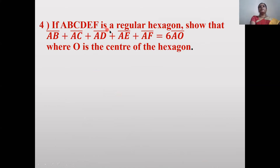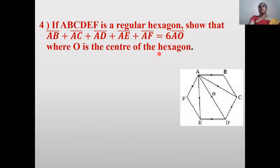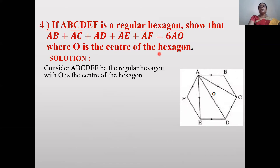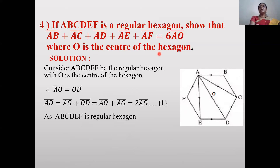Next problem: If ABCDEF is a regular hexagon, show that ĀB̄ + ĀC̄ + ĀD̄ + ĀĒ + ĀF̄ = 6·ĀŌ, where O is the center of the hexagon. Draw the hexagon ABCDEF with O as center.